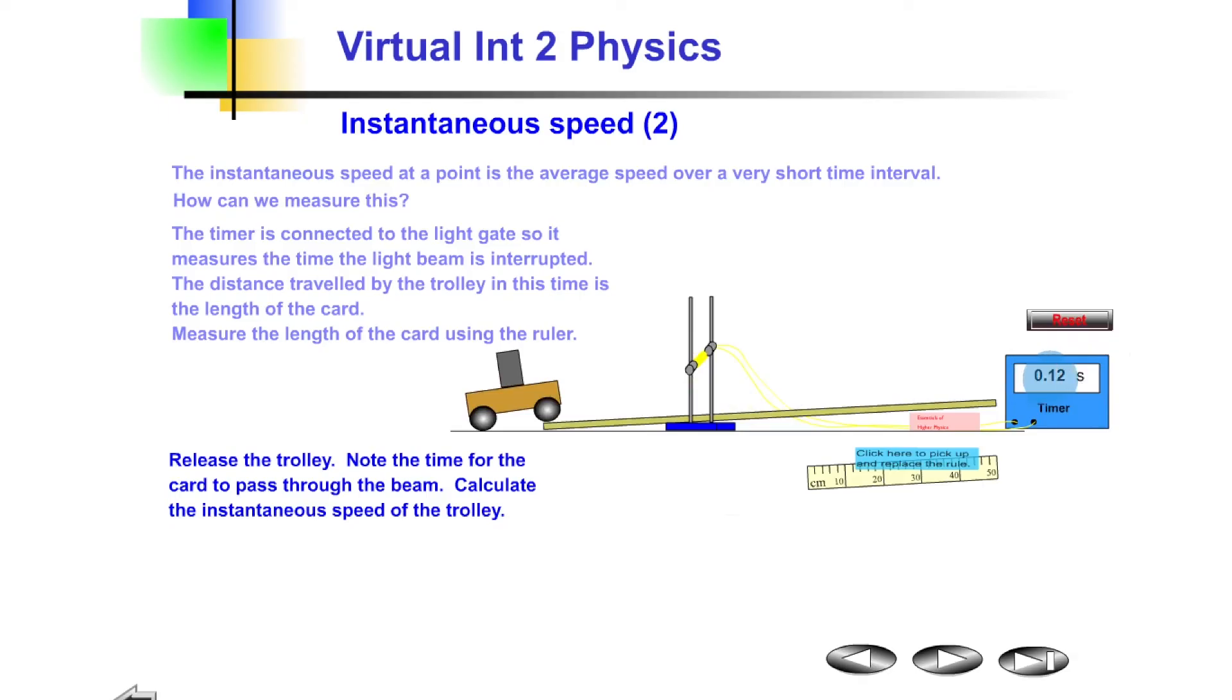We have a time here of 0.12 seconds. We could calculate the instantaneous speed by doing the width of the card, which was our 0.06 meters, divided by the time taken of 0.12 seconds, and we would then get a value for that instantaneous speed in meters per second.